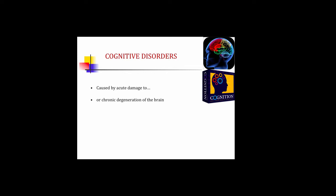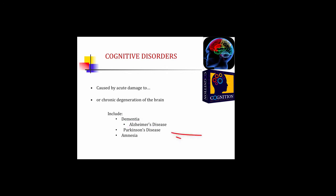Cognitive disorders are caused by acute damage to or chronic degeneration of the brain. These disorders include dementia. The most common form we'll be discussing is Alzheimer's disease. We'll also be discussing Parkinson's. Another cognitive disorder we're not covering is amnesia.